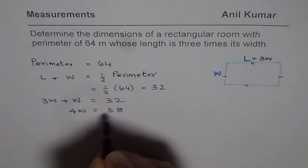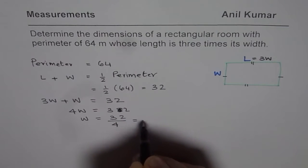Four widths are 32. So each width is equals to 32 divided by four which is eight.